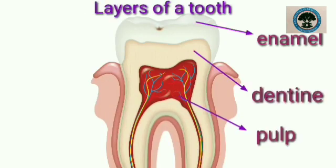Layers of a tooth. First is enamel. Enamel is the outer layer. It is white in color. It is the visible part. It helps in chewing food. Enamel is the hardest substance in our body — that is a very important GK question, students. Which is the hardest substance in our body? The answer is enamel.